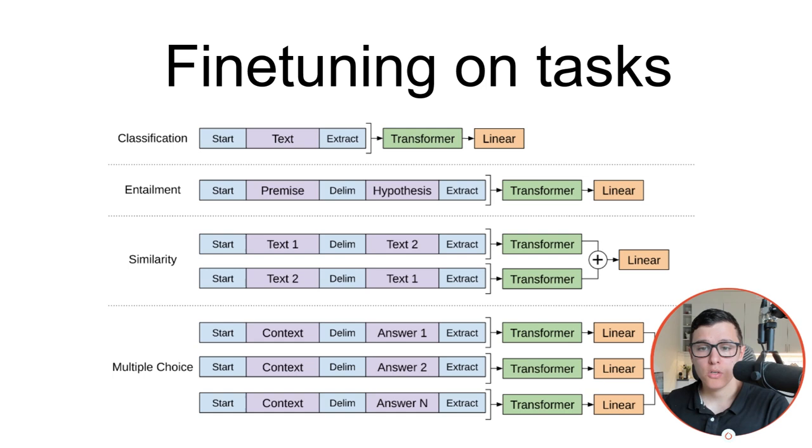So the question is, how do we get it to work on multiple tasks? If we look at classification, sentiment analysis for example, the idea is that we have some start token, we add a text, and then we have some final token that they call extract here. Then we send it through the transformer, our architecture, and then at the end we have this linear layer that is connected to the output of the final output from the transformer.